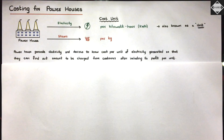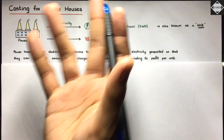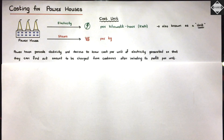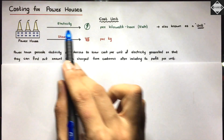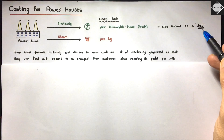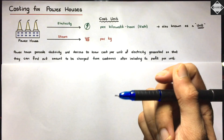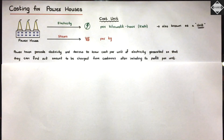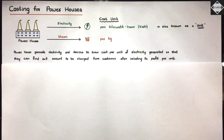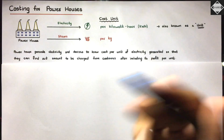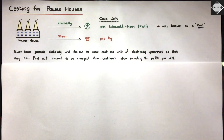Service costing here is simple: the total cost is the numerator, and the denominator is the cost unit. For electricity, the cost unit is per kilowatt hour (kWh), commonly called 'units' — as seen on your electricity bill at home. For steam, it is per kg, per ton, or per pound.